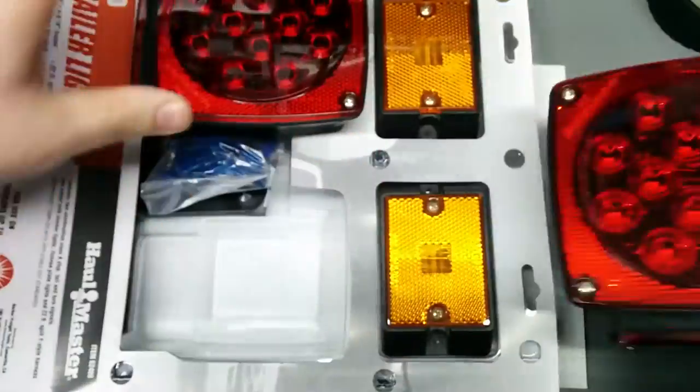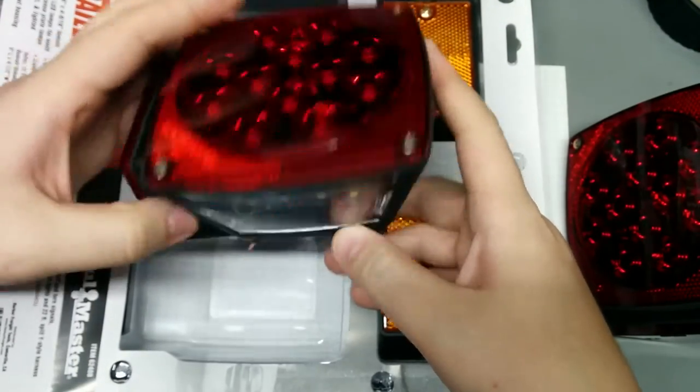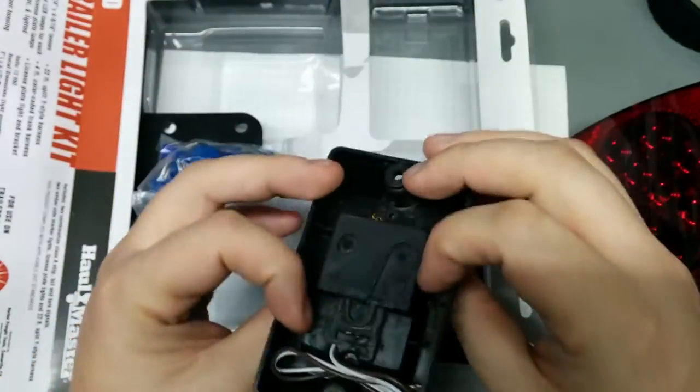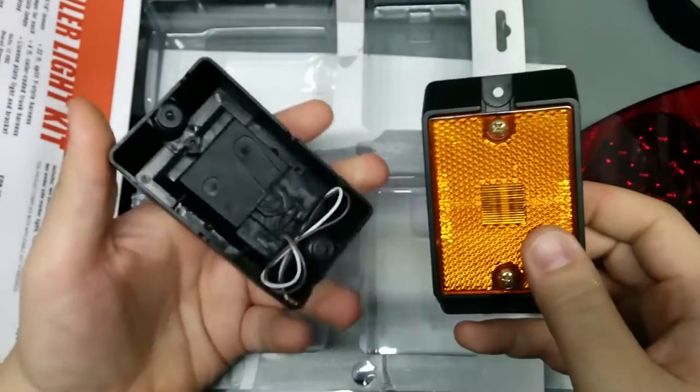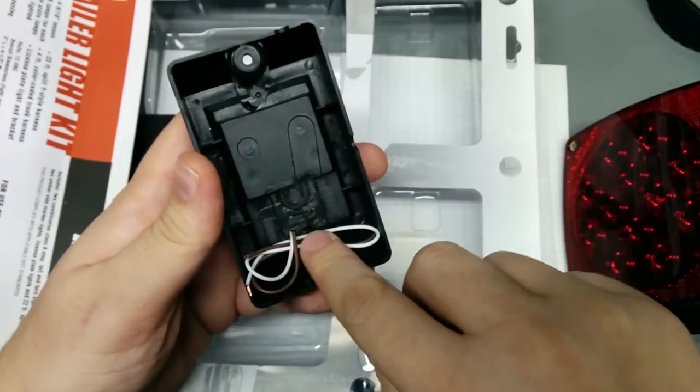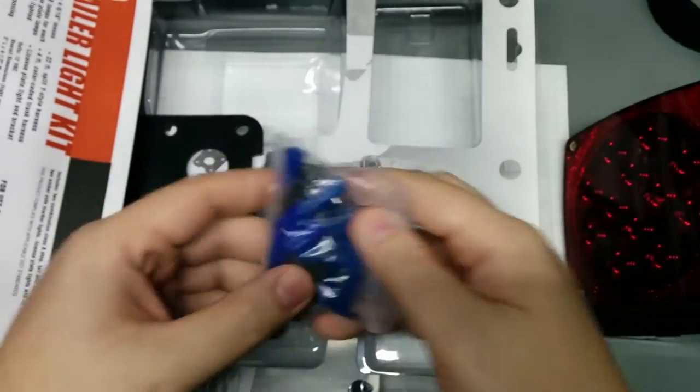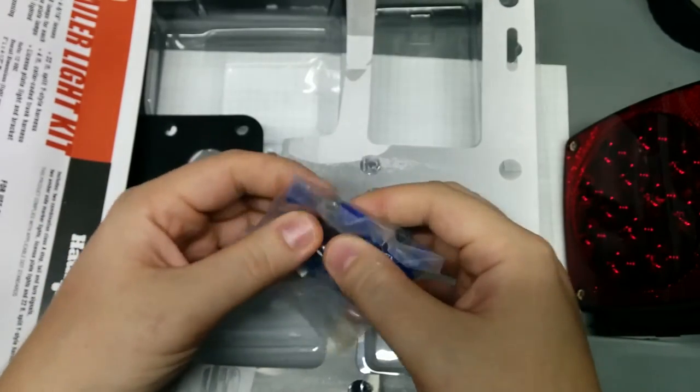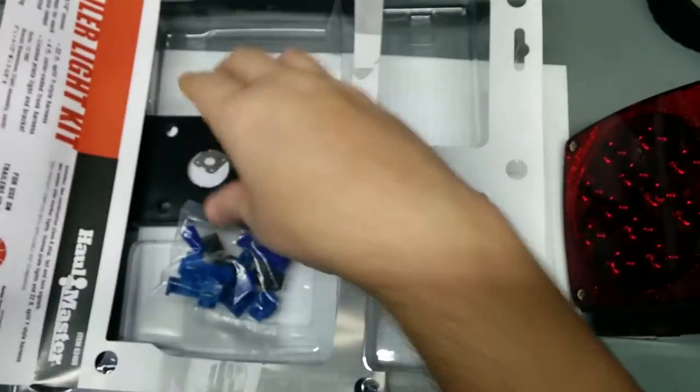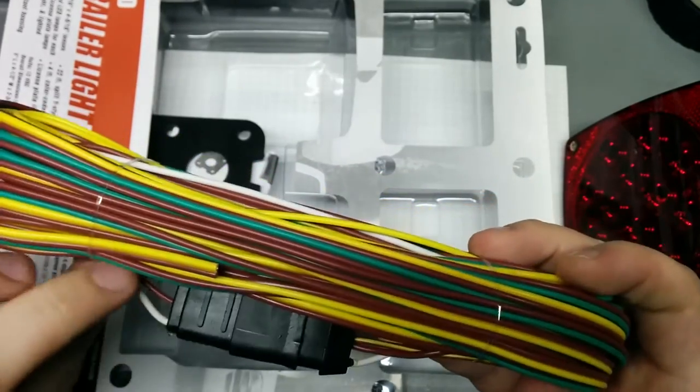So these are the two taillights. This is, I think, the driver's side because it has the extra lights for the license plate. Those are actually LED too, which is nice. The two indicators, which I can't tell what these are, but these are definitely different than the ones that came with the trailer because they actually have a separate ground wire rather than that crazy metal tab thing.